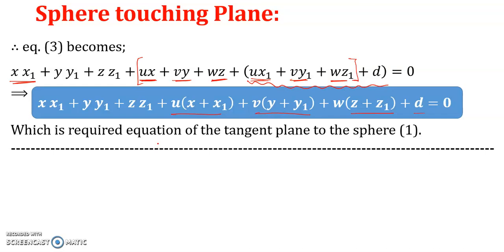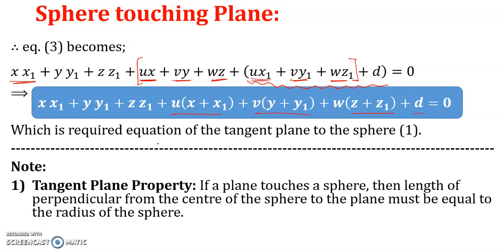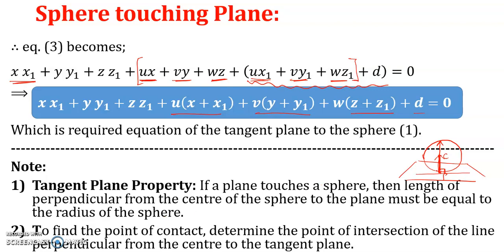Note the tangent plane property: if a plane touches a sphere, then the length of the perpendicular from the center of the sphere to the plane must equal the radius of the sphere. For a point P lying on the sphere and on the plane, a line through P to the center is perpendicular to the plane. So the perpendicular distance from the plane passing through the center equals the radius. To find the point of contact when the equation of the sphere and the equation of the plane are given, we determine the point of intersection by taking a line through the center perpendicular to the plane.